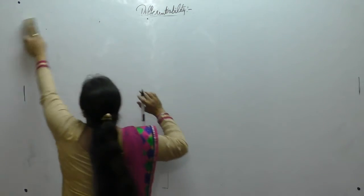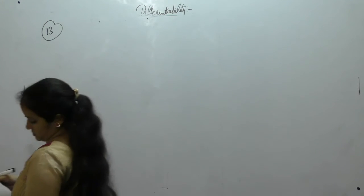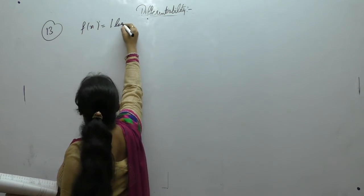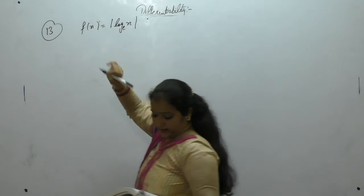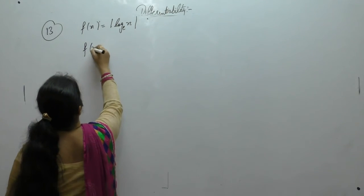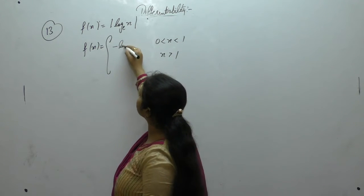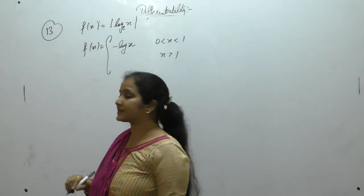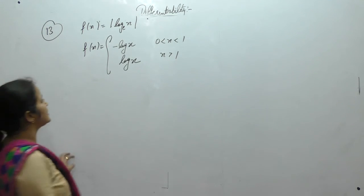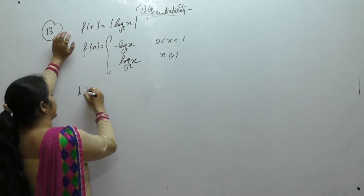Now the next one. Discuss the differentiability of f(x) = |log x| for x > 0. For x > 0 but less than 1, log x is negative so |log x| = −log x. When x is greater than or equal to 1, log x is positive so |log x| = log x. Now we want to check differentiability.